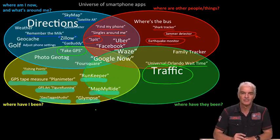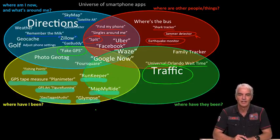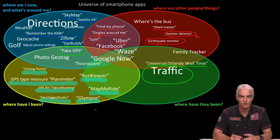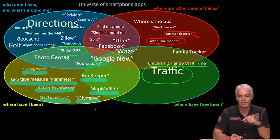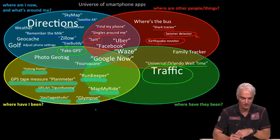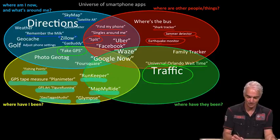Waze is a company bought by Google that combines 'where have other people been,' 'where are they now,' and 'where am I now.' It's a traffic app showing you traffic conditions. One reason it's used by so many people is that users can tag where they see police on the roads — you see a little icon showing where traffic cops are — so people use it to get forewarning of where traffic cops are located.